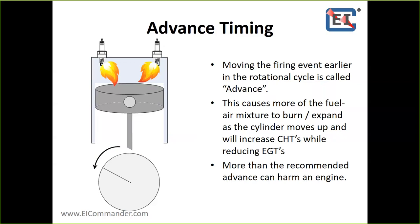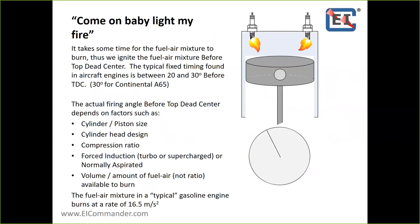The things that impact your timing: piston size, cylinder head design, compression ratio, volume fuel-to-air mixture — the total amount of fuel-air, not your ratio. For those running an angle valve engine, the reason an IO-360 angle valve produces 200 horsepower and a parallel valve IO-360 only produces 180 is because the angle valve engines have a hemispherical head, so they're more efficient. An engine is nothing but an air pump — the easier it is to get fuel and air in and out, the more efficient it will run. A 30-degree timing, which is what the B curve is, is perfect for a Continental A65 engine.